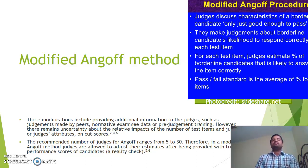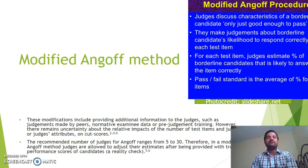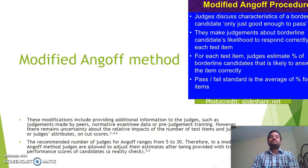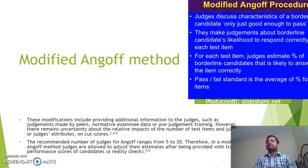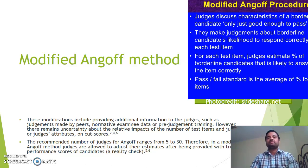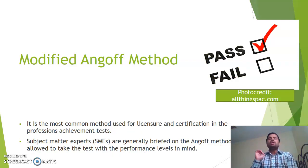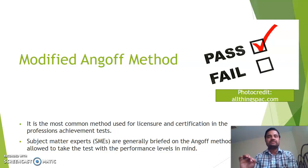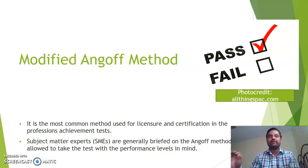The recommended number of judges for the Angoff method can range from 5 to 30. In this approach, the judges or experts are allowed to adjust their estimates after being provided with the true performance achievement scores of the candidates — a reality check. This is the most common method used for licensure and certification in the professions and achievement tests: the modified Angoff method.